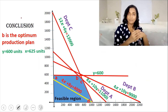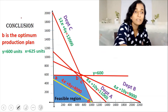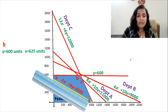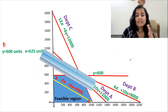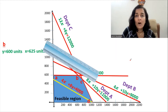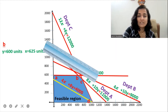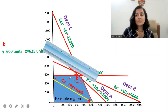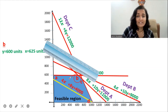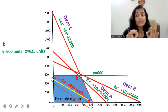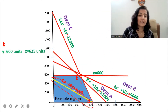Under the ISO contribution line method, we saw that B is the optimum production plan. We had placed a scale adjacent to the ISO contribution line and moved it parallel to the ISO contribution line away from the origin. The point at which the scale leaves the feasible region was the optimum production plan. In the simultaneous equation method, we don't need the scale or the ruler, and you don't need to draw the ISO contribution line in the graph.